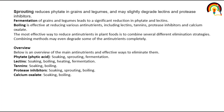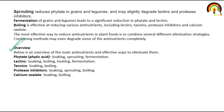Sprouting reduces phytate in grains and legumes and may slightly degrade lectins and protease inhibitors. Fermentation of grains and legumes leads to a significant reduction in phytate and lectins. So we can use sprouting, fermentation, and boiling to reduce anti-nutritional factors. In summary: phytic acid can be reduced by sprouting, fermentation, and soaking; lectins by boiling, heating, and fermentation; tannin by boiling and soaking; protease inhibitors by soaking, sprouting, and boiling; calcium oxalate by boiling.